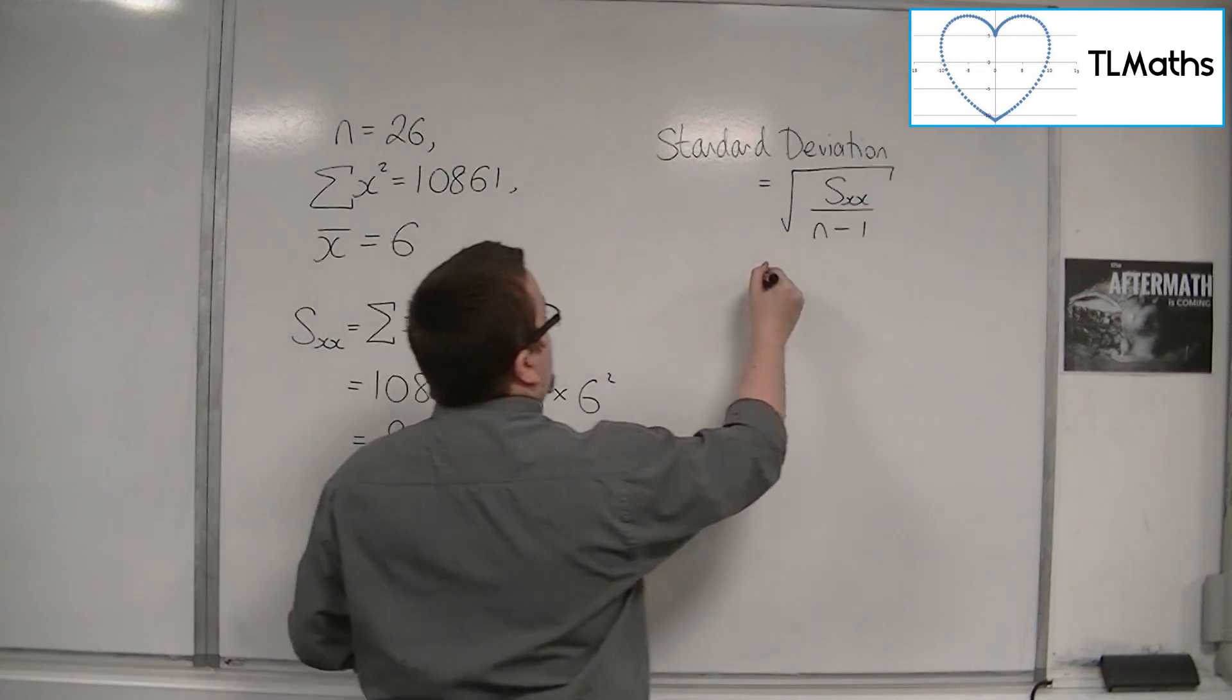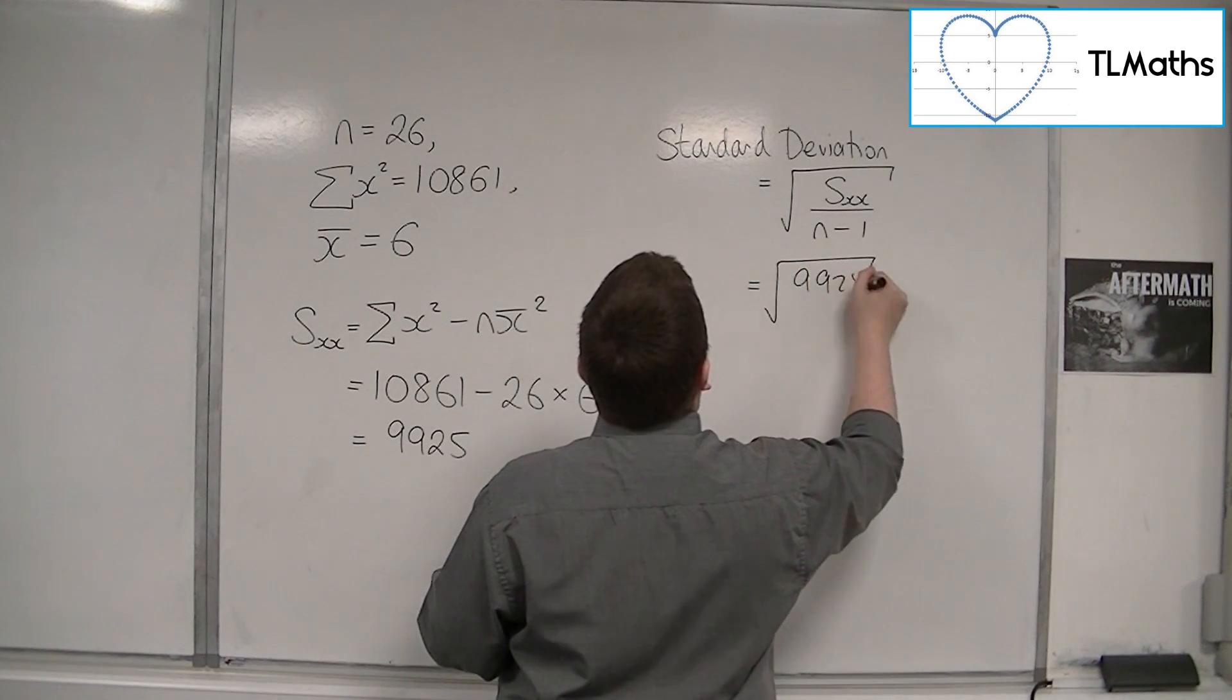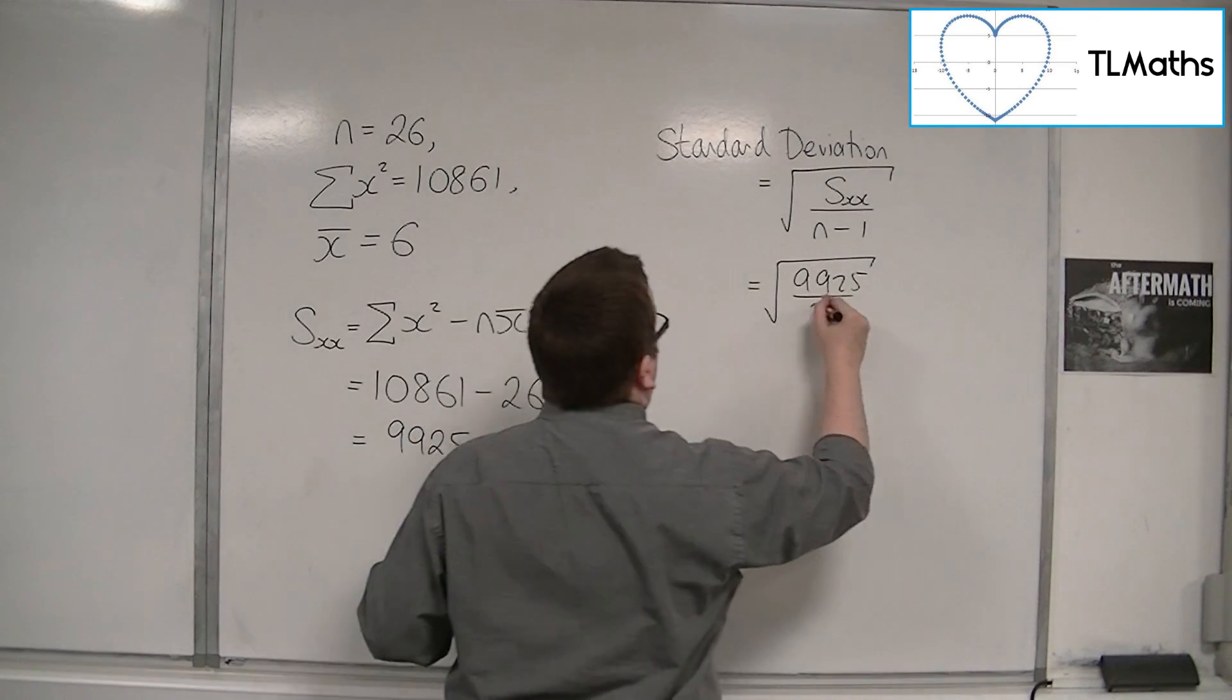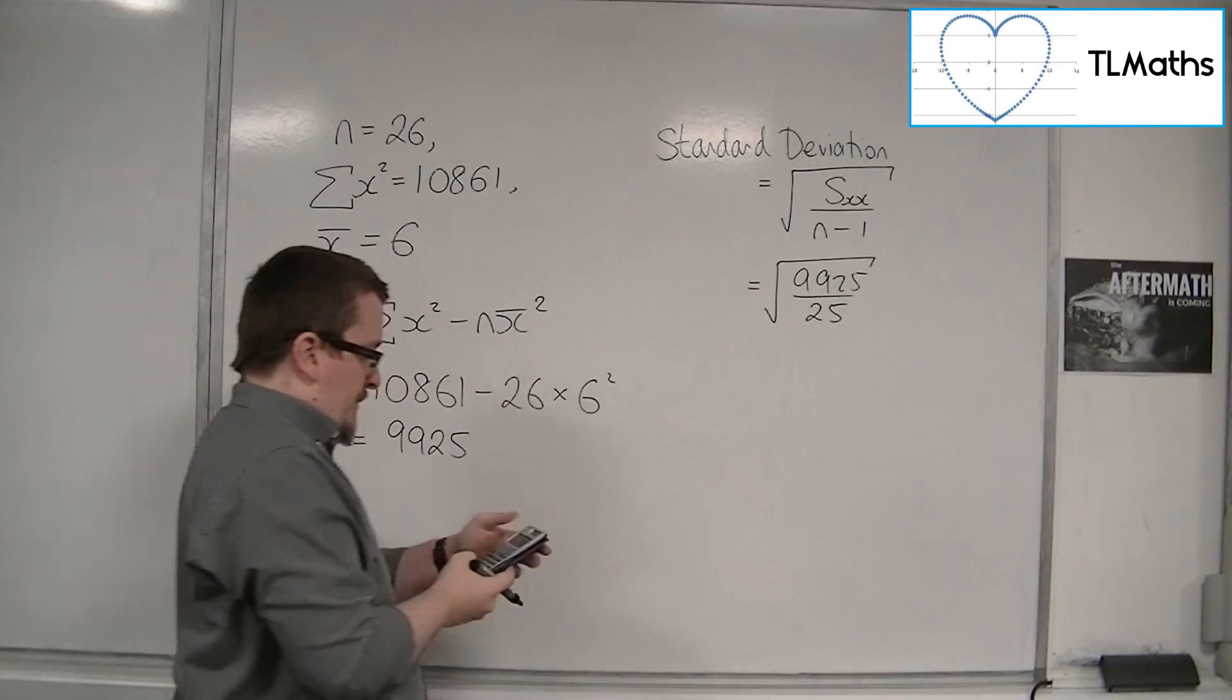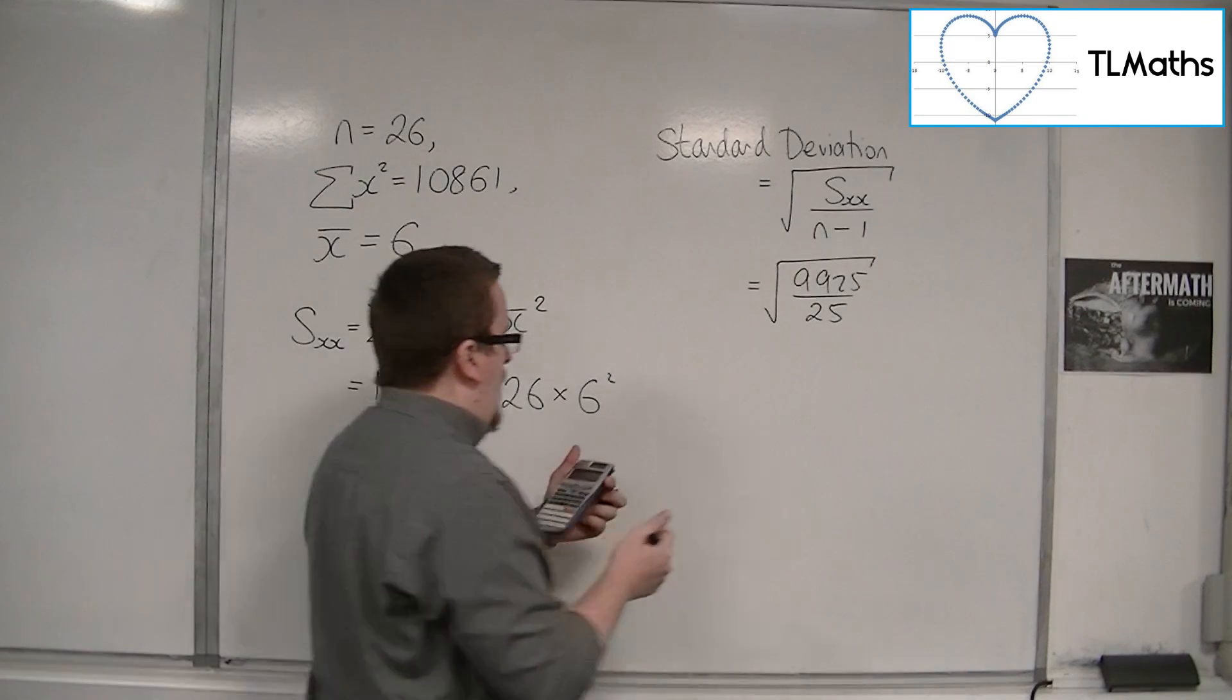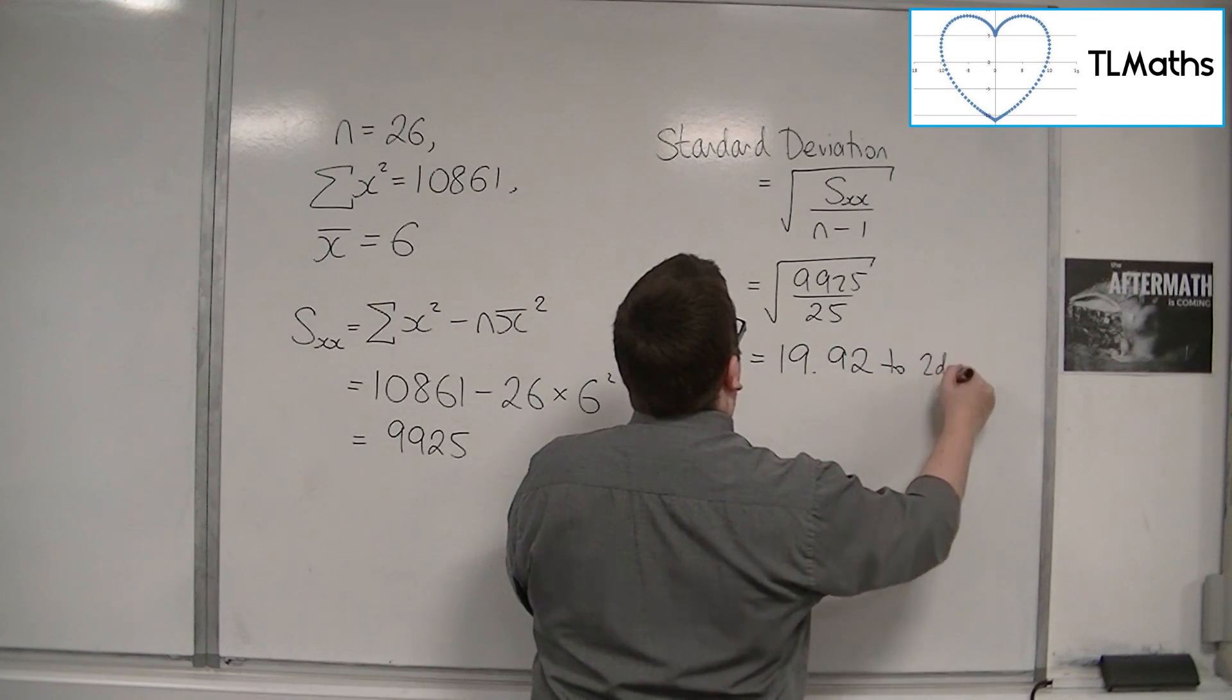The standard deviation is the square root of 9925 divided by n minus 1, which is 26 take away 1, so 25. We divide by 25, then take the square root of our answer, and we get 19.92 to two decimal places.